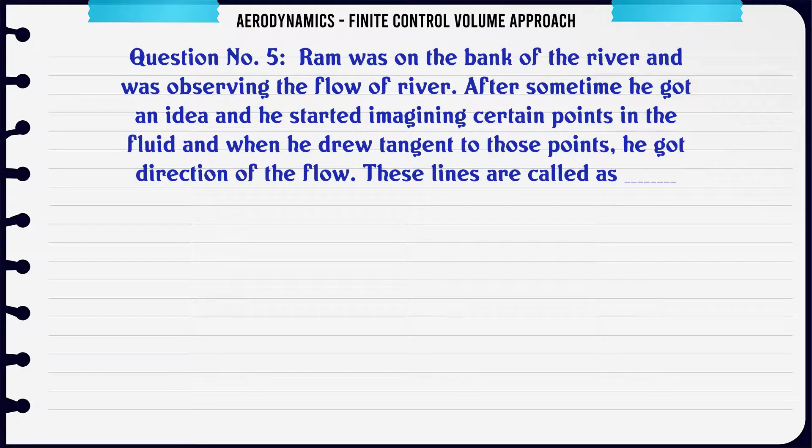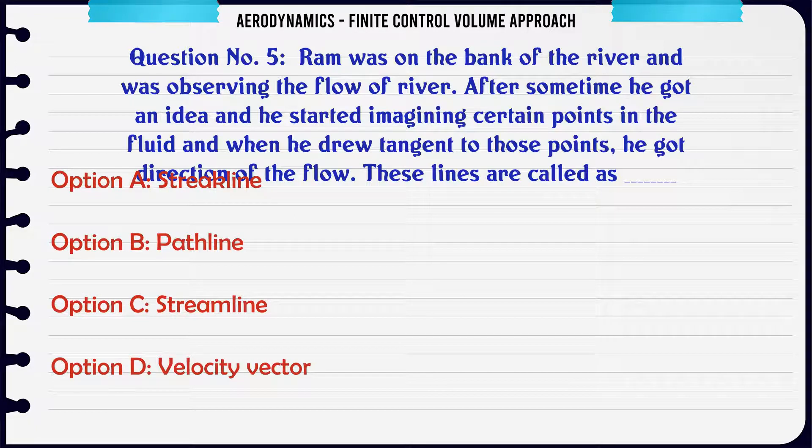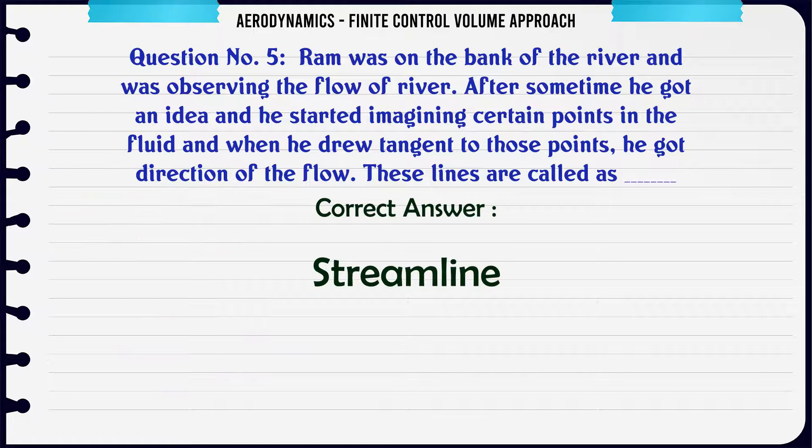Ram was on the bank of the river and was observing the flow of river. After some time he got an idea and he started imagining certain points in the fluid, and when he drew tangent to those points he got direction of the flow. These lines are called as: a. Streetline. b. Pathline. c. Streamline. d. Velocity vector. The correct answer is streamline.